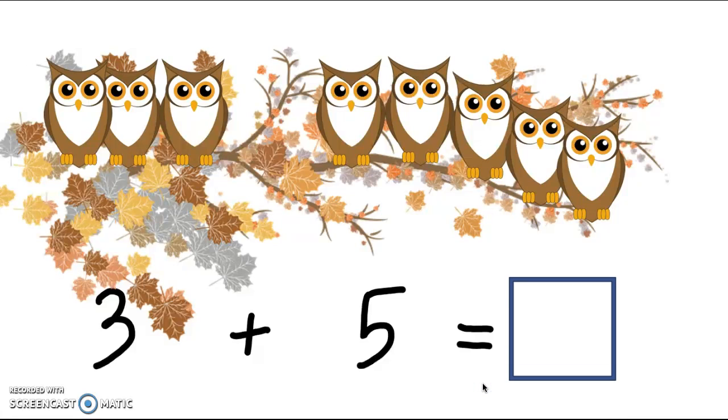Alright. So my number sentence looked like this, three plus five equals something, because I had three owls, then five more came, so that's plus five, and then now there are so many owls on that branch. That's my mystery number. Friend, how could I figure out what three plus five is? Ooh, somebody noticed a five group. Yeah, there's a five group right there. So I could just say five and then count on the other ones, right? Five, six, seven, eight.